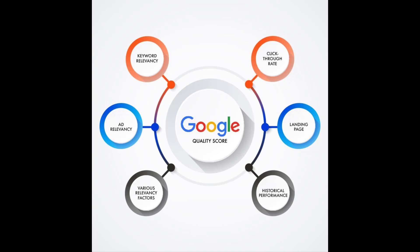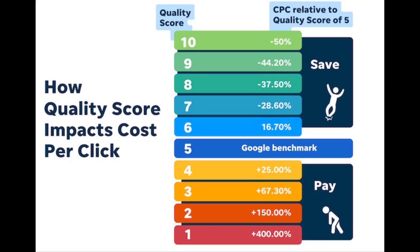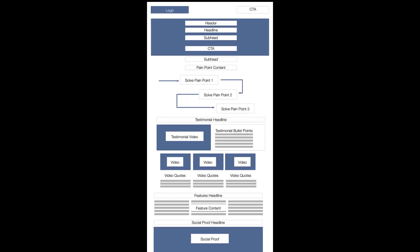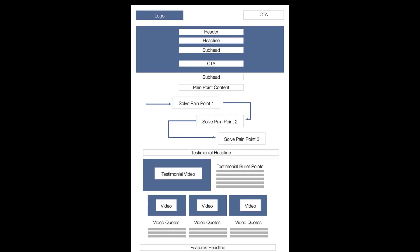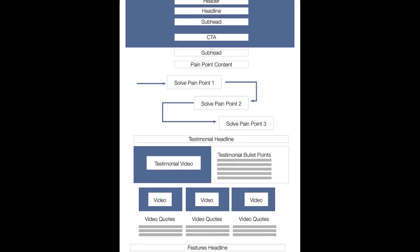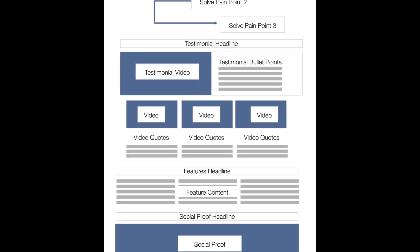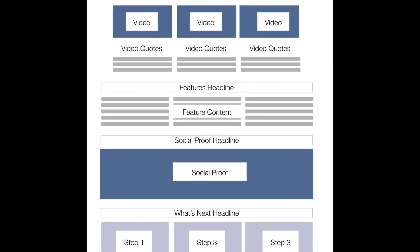Advertising platforms use a similar SEO algorithm to determine your quality score — an arbitrary score given to each page on how it relates to the keyword. This helps advertising platforms keep irrelevant information off of certain searches, but it also allows them to artificially inflate the price of a click. The code structure for this type of page is similar to the SEO structure, with a few major differences.